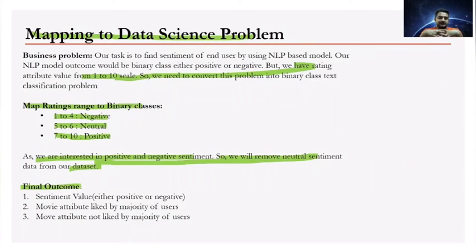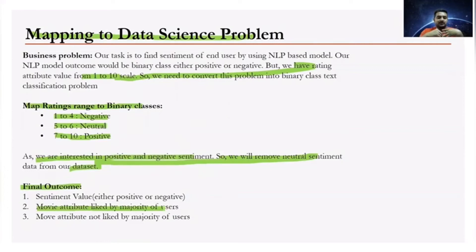The final outcomes for this problem are: first, the sentiment analyzer predictions — either positive or negative sentiment based on the review text. Second, we will also surface the movie attributes liked by the majority of users, such as action, directors, actors, and story, as well as the attributes not liked by the majority — and we will show all of this in the end.